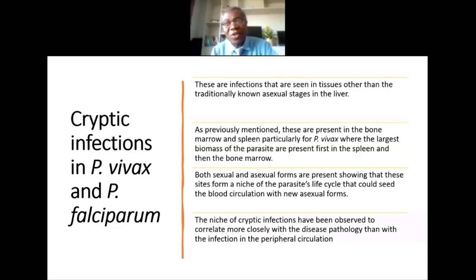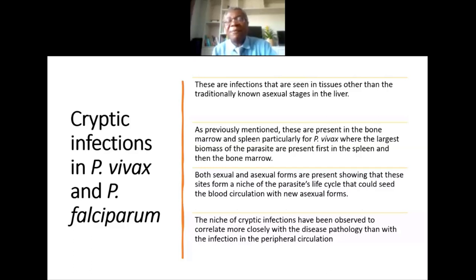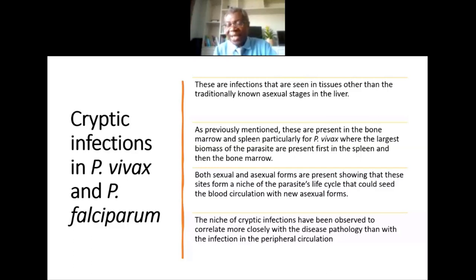Currently, the only drugs available for targeting hypnozoites are the 8-aminoquinolines — primaquine and tafenoquine. There is a known link with G6PD deficiency: subjects who are G6PD-deficient can undergo hemolytic anemia and therefore need to be tested before these drugs are rolled out. WHO has indicated use of low-dose primaquine at 0.25 mg/kg body weight, which appears to minimize side effects even without G6PD testing, and could be a good option for ensuring hypnozoites are targeted.